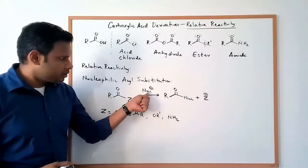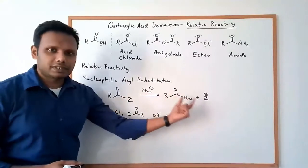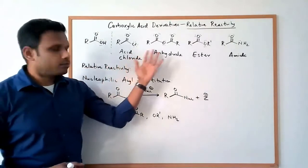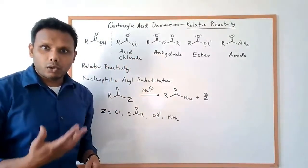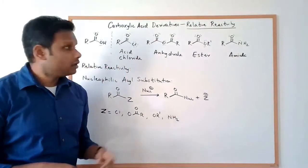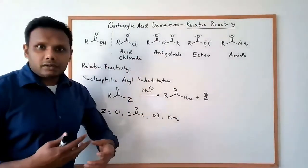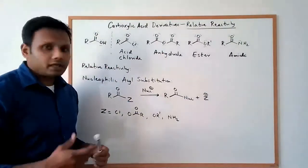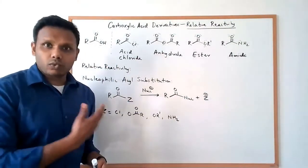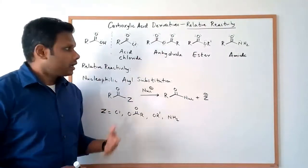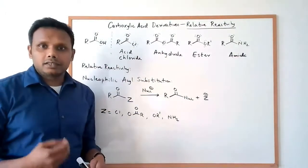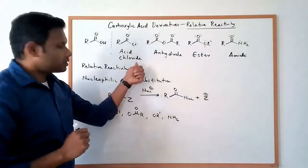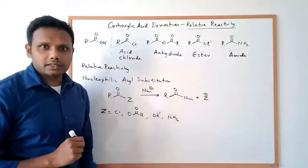Essentially, what happens is the nucleophile substitutes for the Z, and the Z gets kicked out. Now, the fact that we have various carboxylic acid derivatives — does that mean they all react equally well? Do they react equally fast or equally slow? What are the relative rates? Does one of them react faster than the other ones? And the simple answer to that is yes. It turns out acid chlorides are the most reactive of carboxylic acid derivatives.